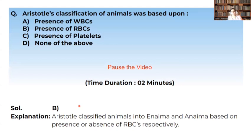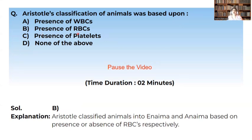Now let us take a small concept test. Aristotle's classification of animals was mainly based on: presence of RBCs, presence of WBCs, presence of platelets, or none of the above. Please pause the video for two minutes to answer. As we discussed, Aristotle classified animals based on the presence of RBCs. Animals having RBCs with red-colored blood were classified as Enema, whereas those without RBCs, with blue or white-colored blood, were classified as Anema. So the correct option is presence of WBCs.